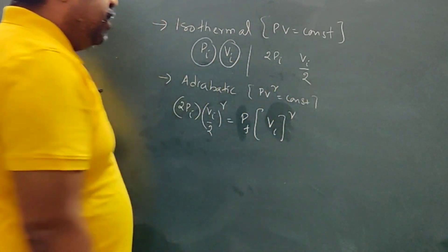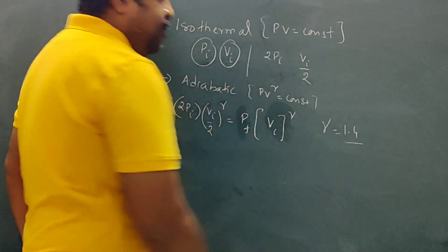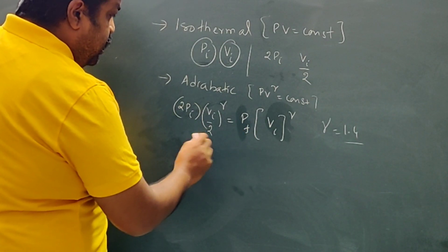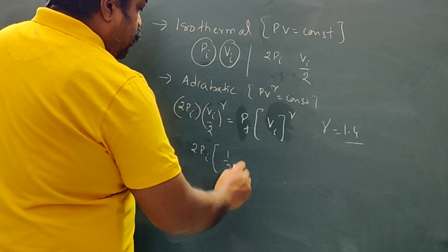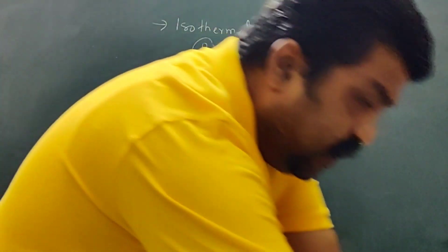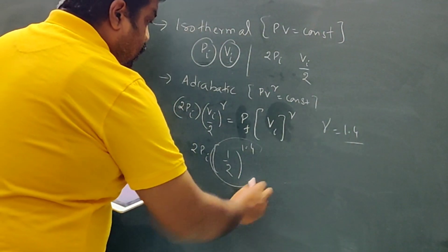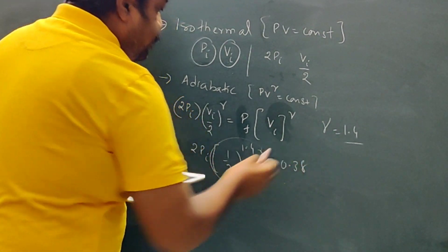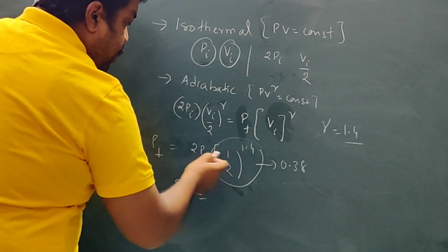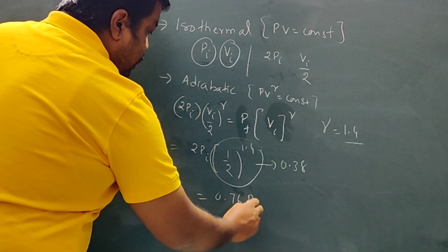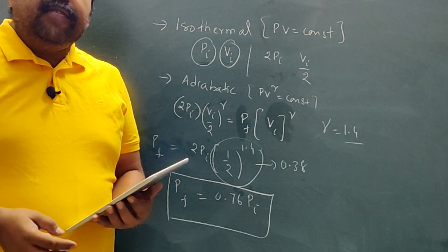Using PV^γ = constant for the adiabatic process, and for diatomic gas γ = 1.4, we substitute: 2Pi × (V/2)^1.4 = Pf × V^1.4. Simplifying gives Pf = 2Pi × (1/2)^1.4. Since (1/2)^1.4 ≈ 0.38, the final pressure Pf = 0.76 Pi. The correct option is C.